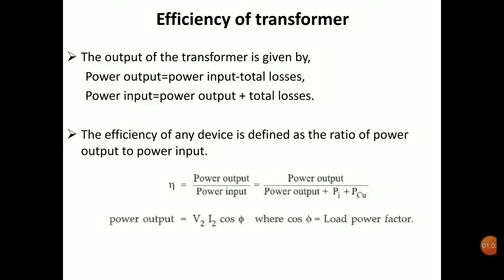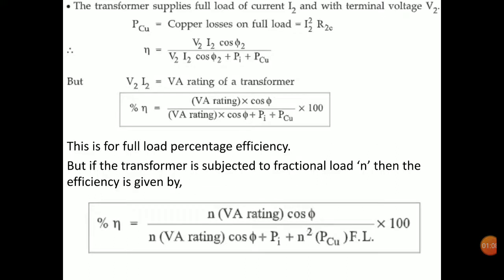Power output is given by V2·I2·cos phi, where phi is the load power factor. The copper loss is given by I2²·R2e, where R2e is the equivalent resistance from the secondary side. So eta is given by V2·I2·cos phi2 divided by V2·I2·cos phi2 plus Pi plus Pcu.